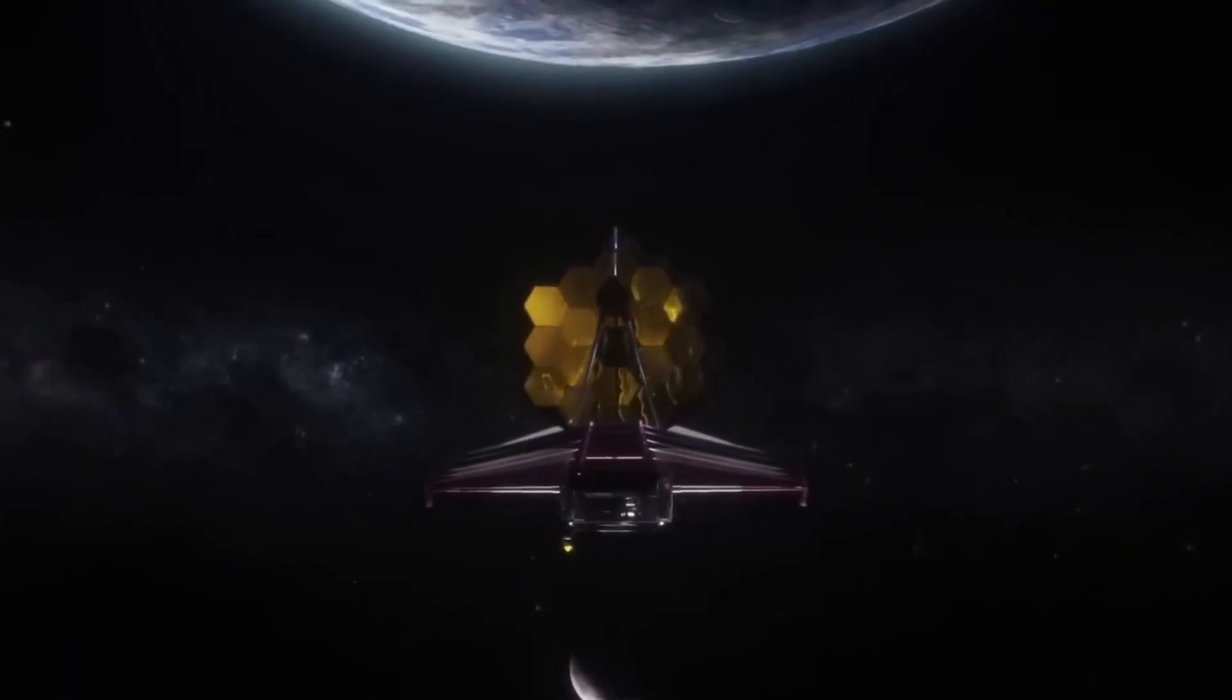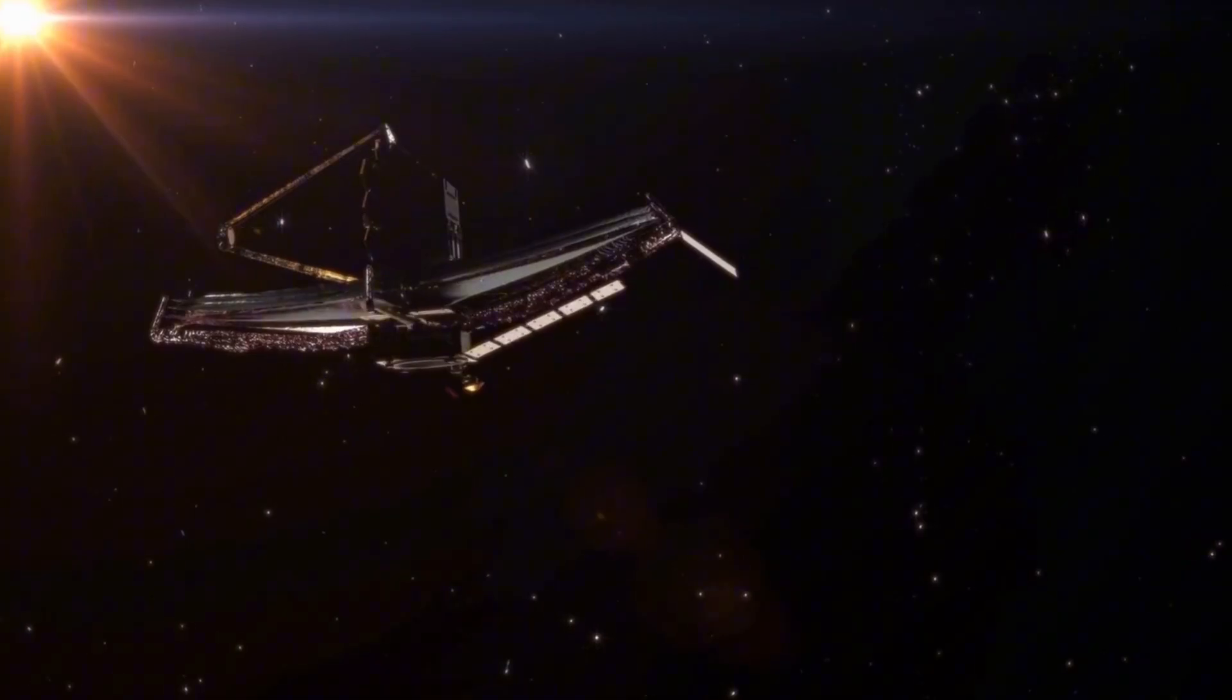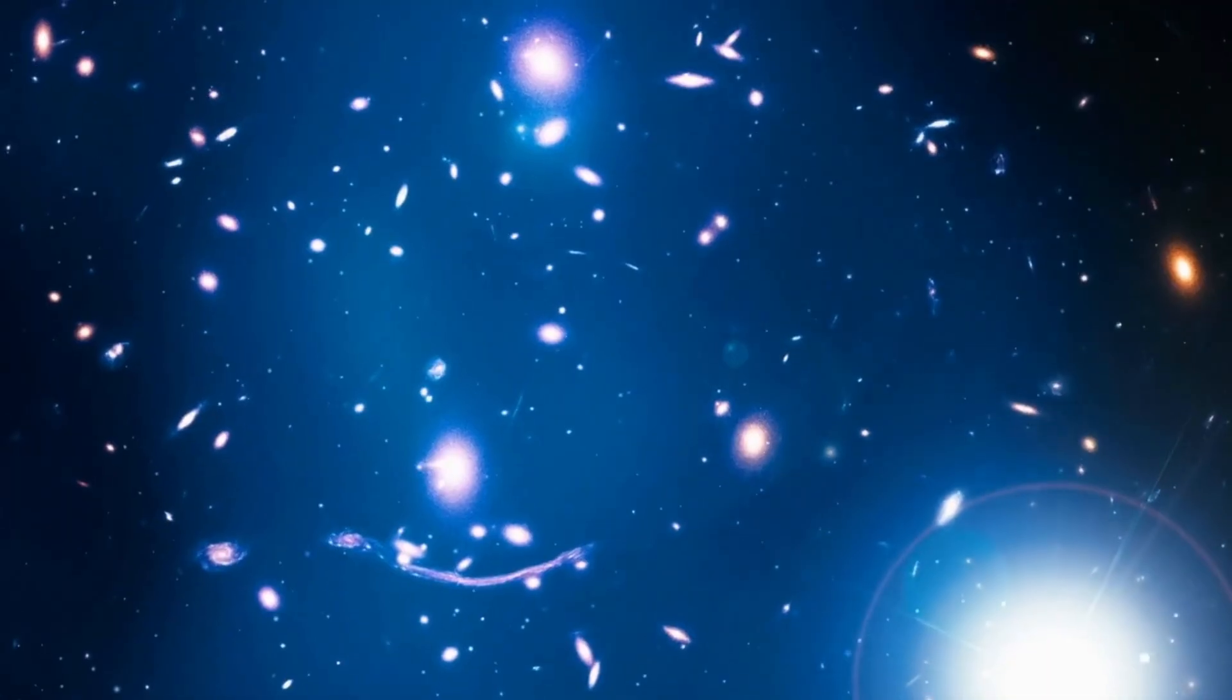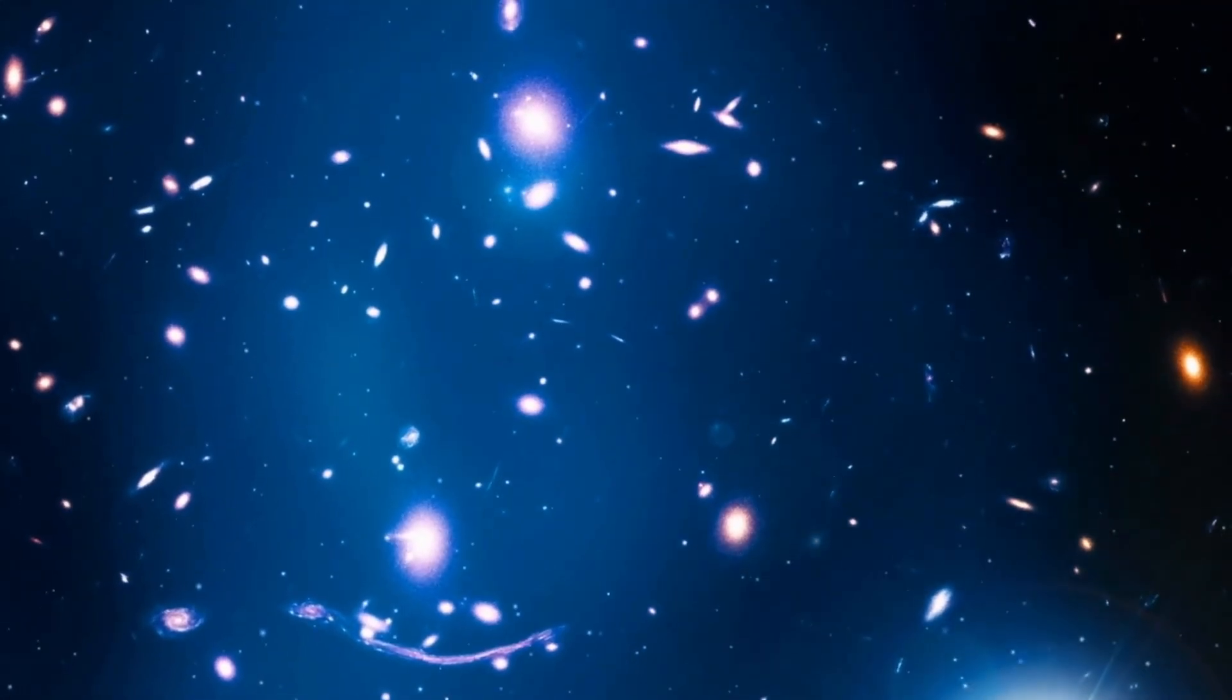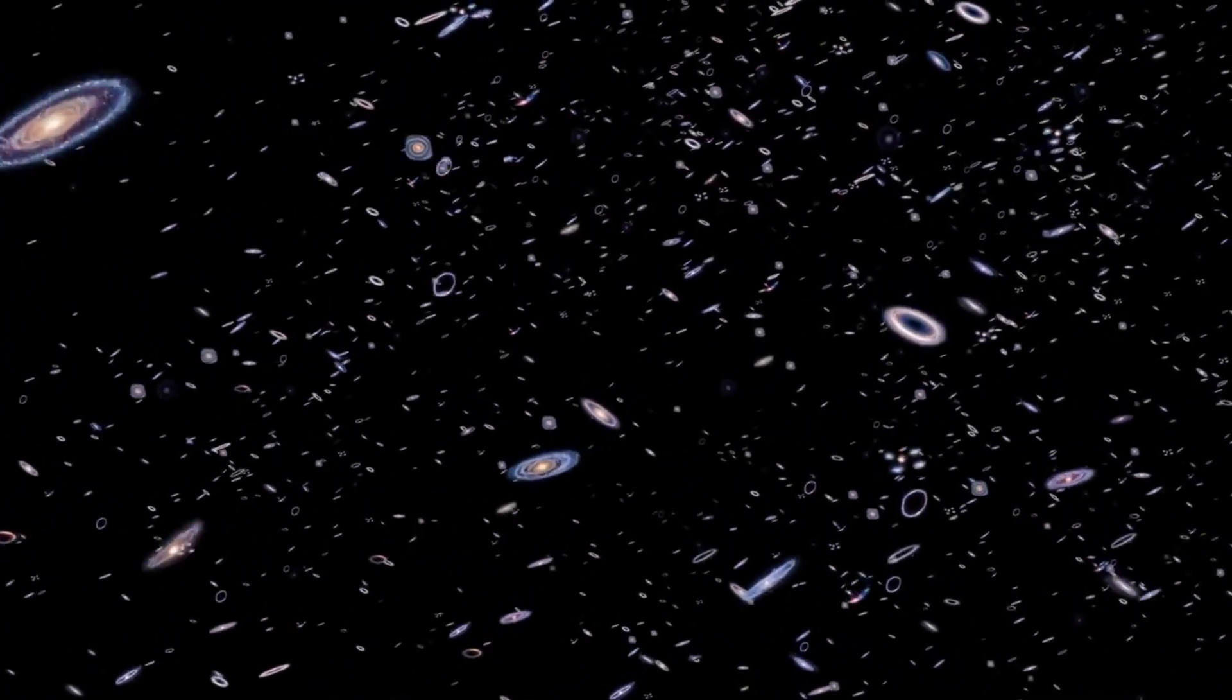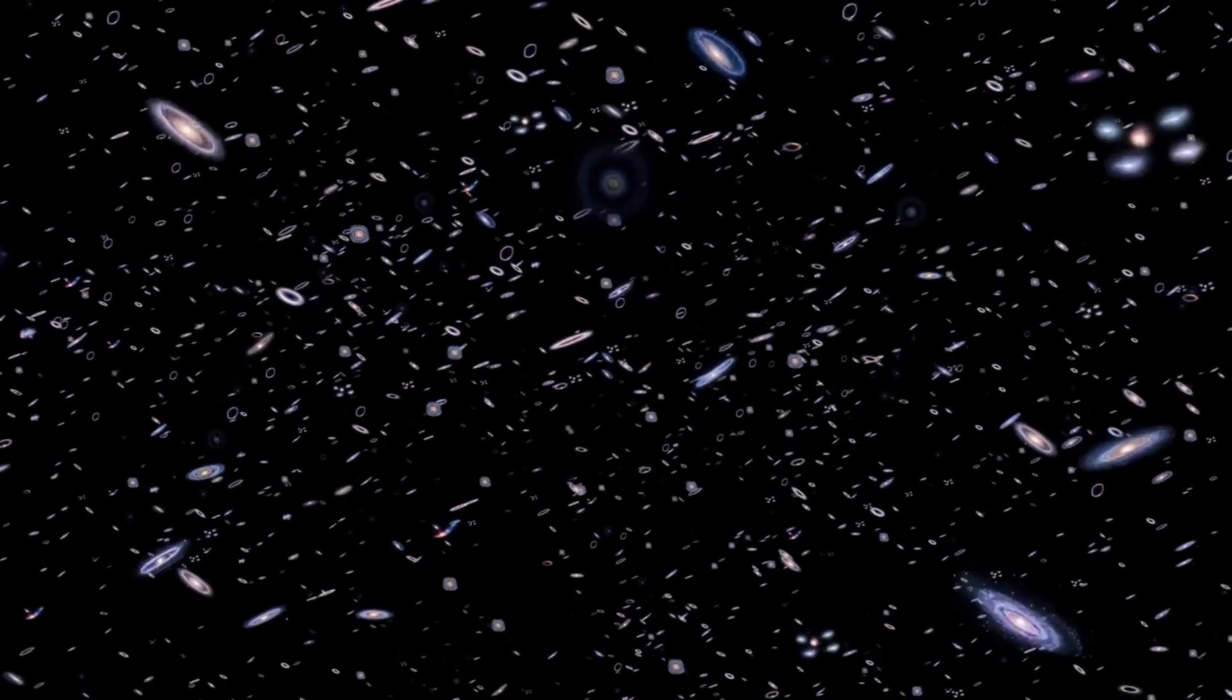Enter the James Webb Space Telescope, the most powerful eye ever cast into the cosmos. It has looked deeper than any telescope before, uncovering galaxies just 300 million years after the Big Bang. But here's the twist. These galaxies are too big, too structured, too mature. They shouldn't exist that early in cosmic history. Could the universe be older than we think?